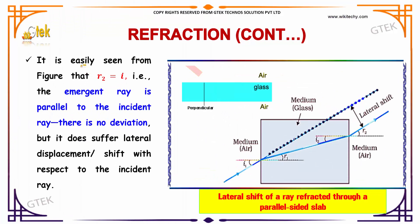It is easily seen from the figure that R2 is equal to I. The emergent ray is parallel to the incident ray. There is no deviation.